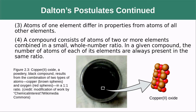In our example here, we have copper oxide. We can see that it is composed of both copper and oxygen in a regular pattern. For every copper atom, there is one oxygen atom, and they arrange themselves together in a definite pattern.